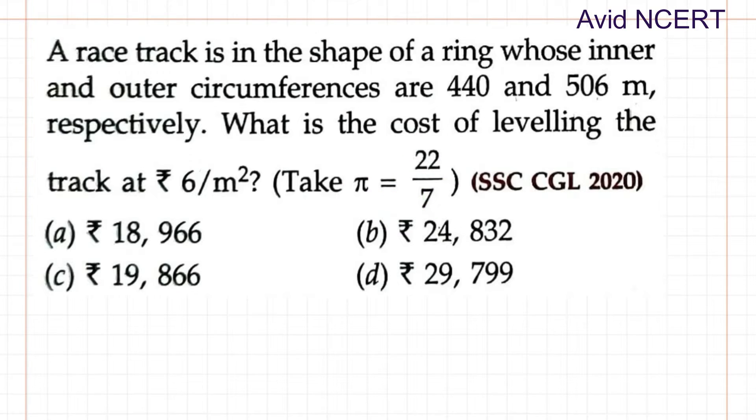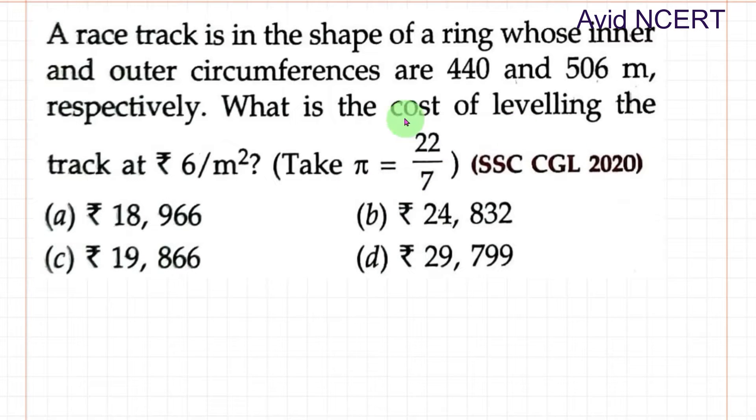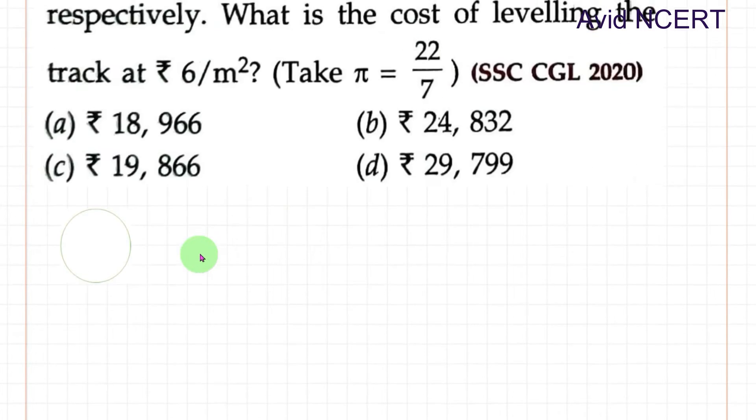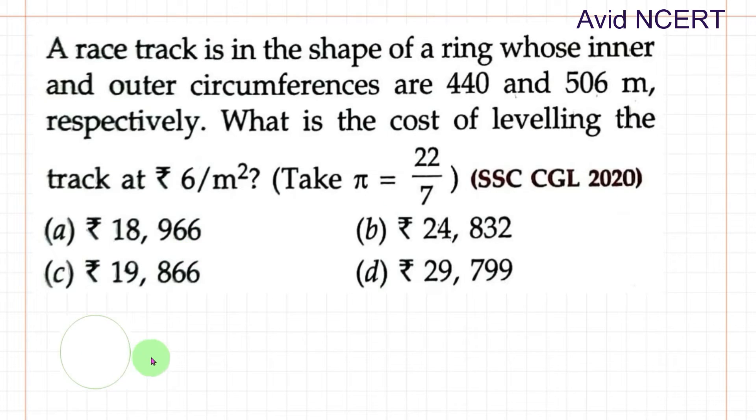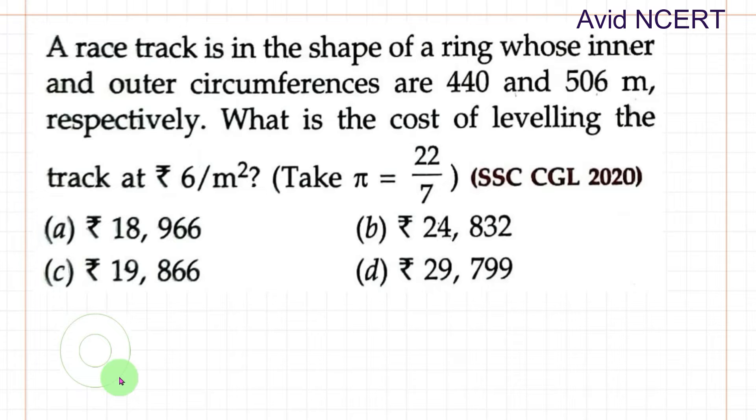From the first sentence, the racetrack is in the shape of a ring with inner and outer circumferences. If this is the outer ring of the racetrack and this is the inner ring of the racetrack, to find the circumference, the formula used is 2 times pi times r, which is 2πr where r is the radius.